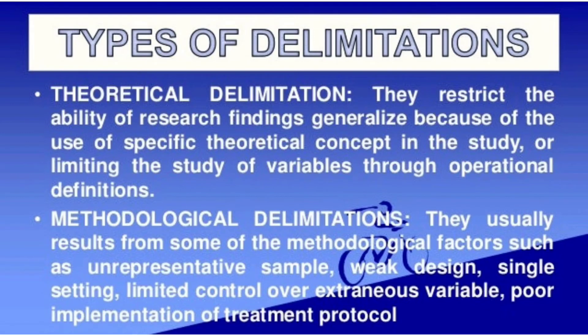Methodological delimitation usually results from methodological factors such as unrepresentative sample, weak design, single setting, limited control over extraneous variables, and poor implementation of treatment protocol. For example, if the sample is not taken from the general population to whom findings will be generalized, or the research design is weak, or the study is conducted in only a single setting instead of multiple settings.